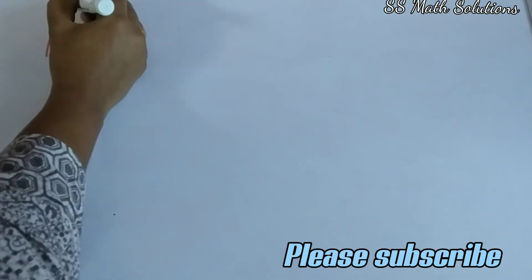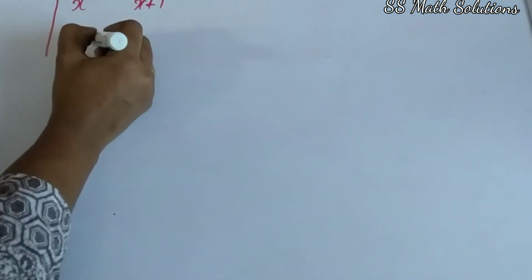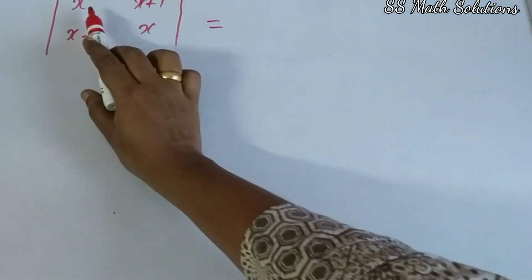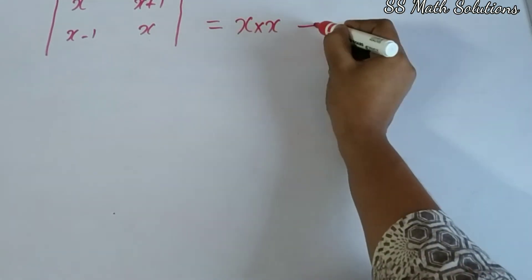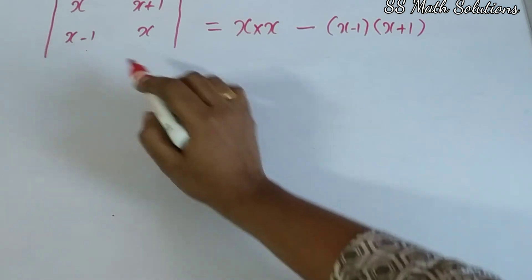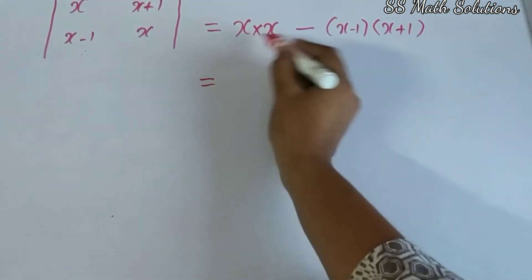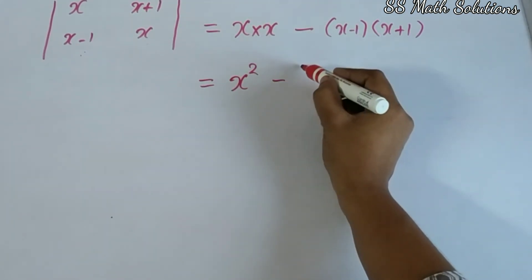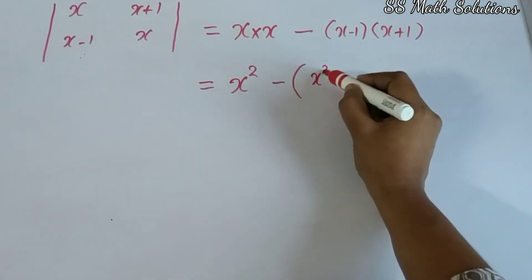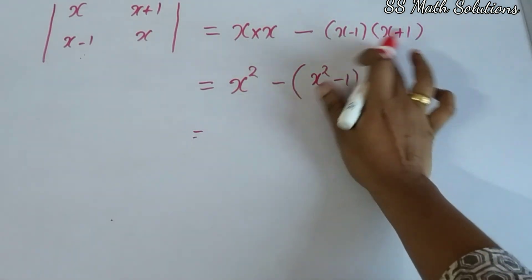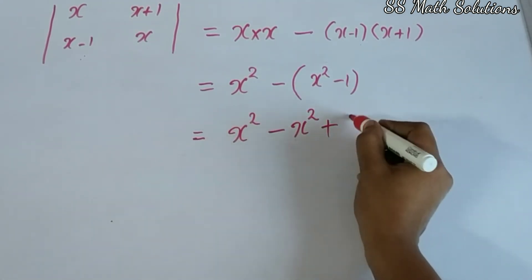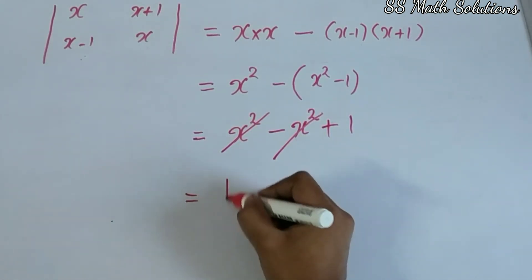Let's try another one: the determinant of [x, x+1; x-1, x]. Cross multiply: x into x, minus (x-1) into (x+1). That gives x squared minus (x-1)(x+1). Now, (x-1)(x+1) equals x squared minus 1. So we get x squared minus (x squared minus 1), which equals x squared minus x squared plus 1. Cancelling gives the final answer: 1.